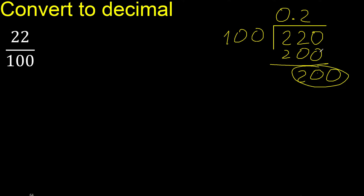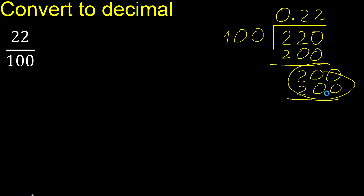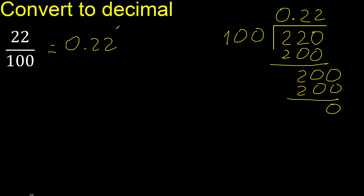200. 100 multiplied by which number is nearest to 200? Multiply by 2 is 200. Subtract: 0. Therefore finish.